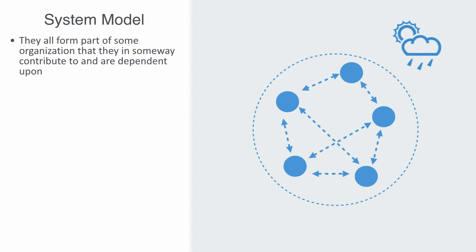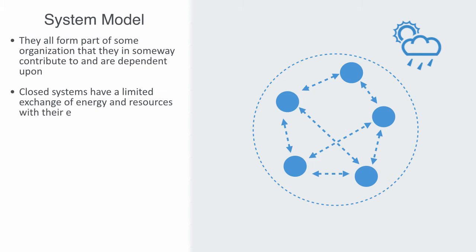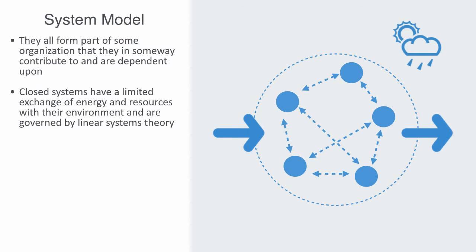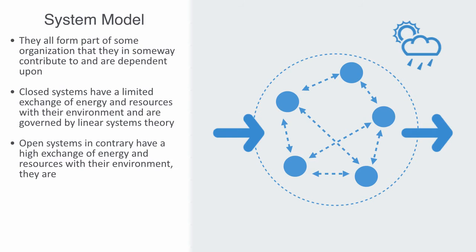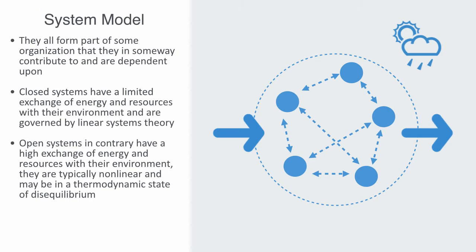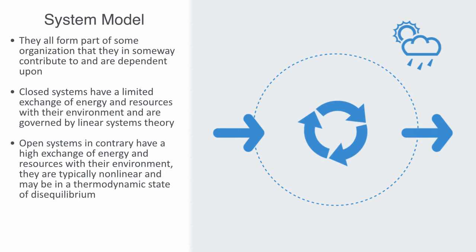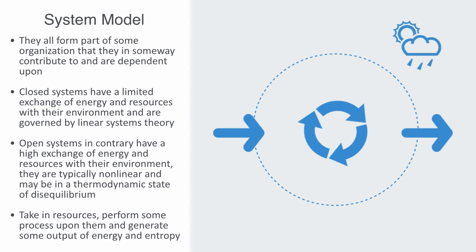Systems can be open or closed. Closed systems have a limited exchange of energy and resources with their environment. Open systems, in contrast, have a high exchange of energy and resources with their environment. They are typically non-linear and may be in a thermodynamic state of disequilibrium. A dissipative system is an open system that performs some function. They take in resources, perform some process upon them and generate some output of energy and entropy. All biological creatures are open, dissipative systems.